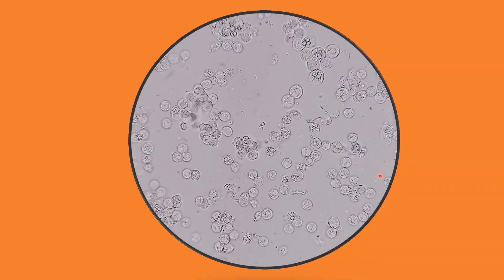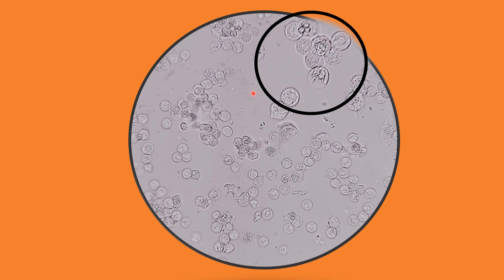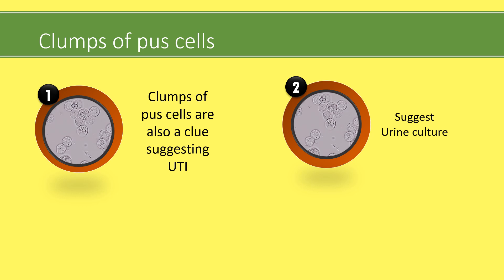In this image, notice these clumps of pus cells — can you see aggregates of WBCs together? There are also bacteria in the background, though they are too small to notice. The presence of clumps of pus cells along with bacteria is an important clue for urinary tract infection. So if we find clumps of pus cells, we should suggest urinary culture.